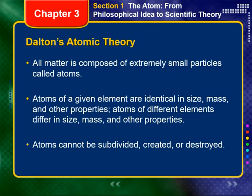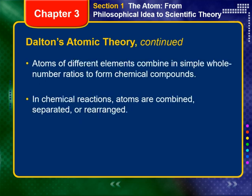In 1808, an English schoolteacher named John Dalton proposed an explanation of the law of conservation of mass, the law of definite proportions, and the law of multiple proportions. He reasoned that atoms can combine to form compounds. His theory can be summed up by the following statements. 1. All matter is composed of extremely small particles called atoms. 2. Atoms of a given element are identical in size, mass, and other properties. Atoms of different elements differ in size, mass, and other properties. 3. Atoms cannot be subdivided, created, or destroyed. 4. Atoms of different elements combine in simple whole number ratios to form chemical compounds. 5. In chemical reactions, atoms are combined, separated, or rearranged.